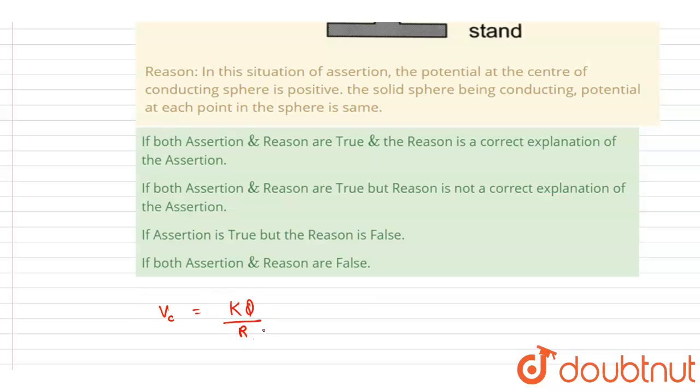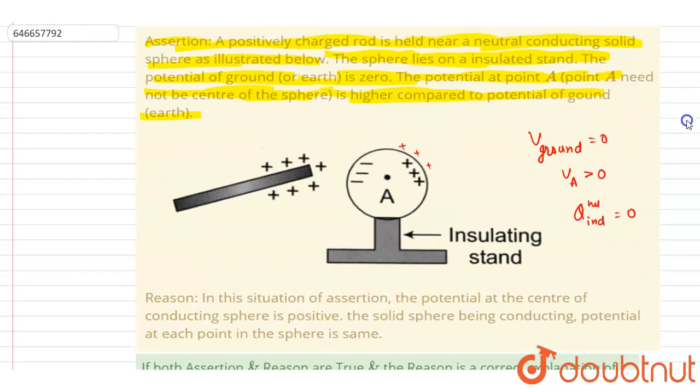And if you write down this, so as I already mentioned here, the net charge will be zero. So potential at the center will be zero. And if you see, we know that it is a conducting solid sphere.